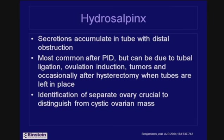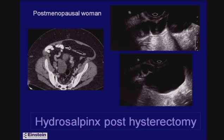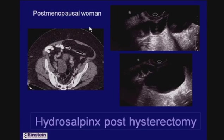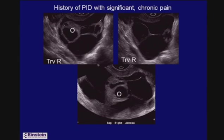Here is an example of a post-menopausal woman who had a hysterectomy but the tube was left. On CT a cystic neoplasm of the ovary was initially suspected, but ultrasound clearly shows the tubular nature of the structure — it was just a simple hydrosalpinx.